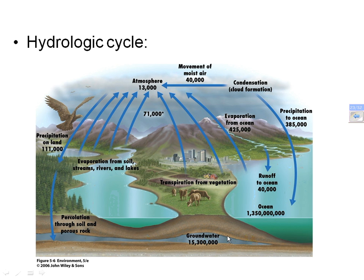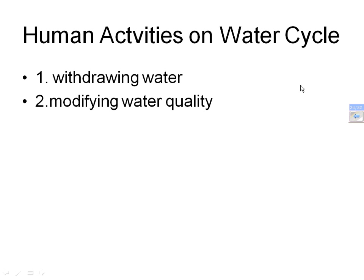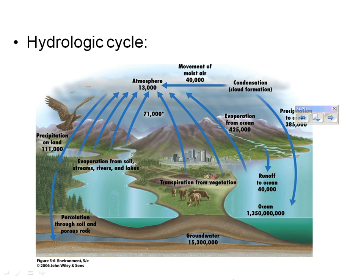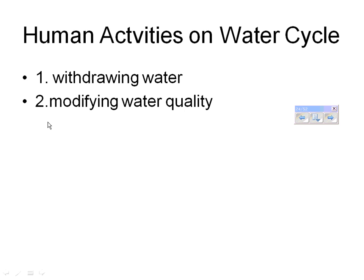Human activities in the water cycle: withdrawing too much water, especially along coastlines, causes saltwater intrusion — overdrawing groundwater near oceans means wells can start taking in brackish water and become unusable. Also modifying water quality through pollution. Many developing countries lack the infrastructure to clean sewage and other pollutants, so they end up polluting the water.